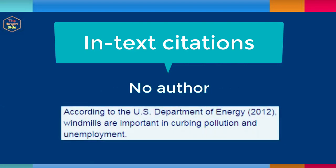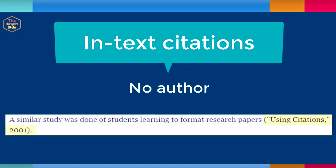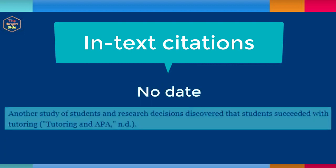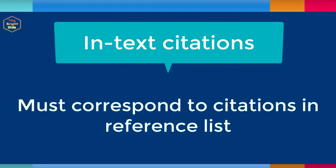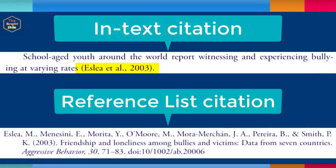If the material you are citing has no author, you might use the organization as the author. For example, your resource might be written by a government agency. Depending on the resource, you could also use the material title in place of the author. Also, if the material you are citing has no date, such as some web pages, use the abbreviation "n.d." for no date in place of the year. Please note that your in-text citations must correspond to a citation in your reference list at the end of your paper. The in-text citations provide a small amount of information about the resource, but the reference list is where the full citations are listed and contain more details.